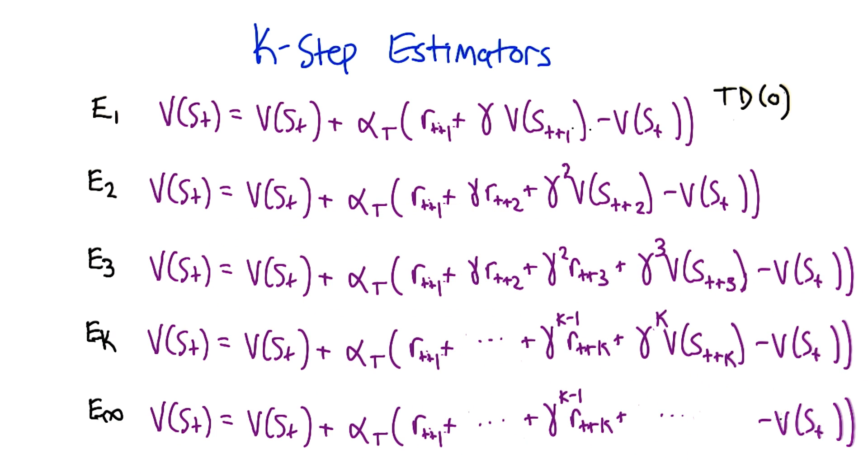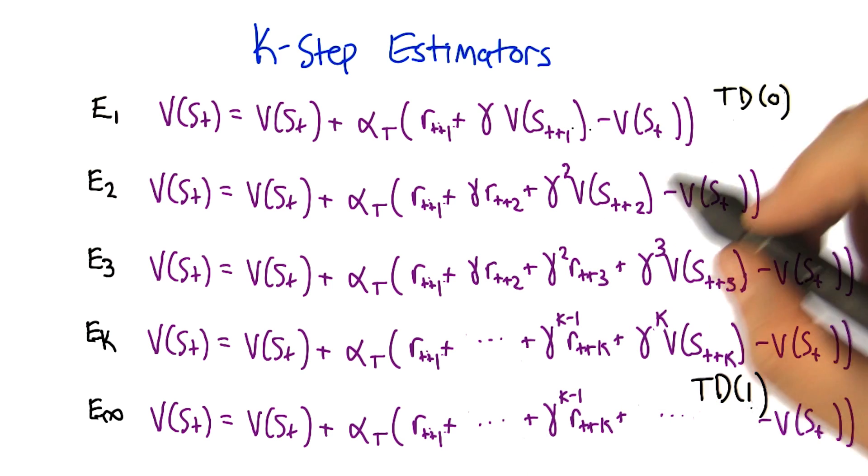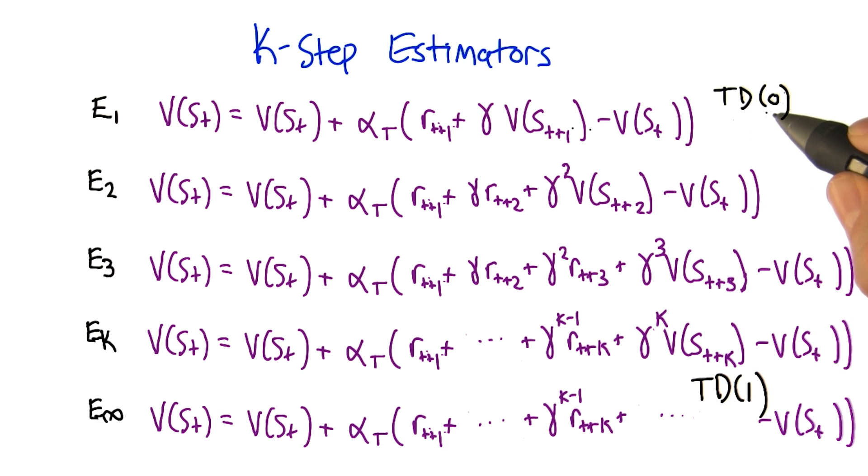Yeah, that looks like TD1. Good. So now we've got TD0 on the one side as a one step estimator and TD1 on the other side as an infinity step estimator. And we've got these other things in between that we don't really have or possibly even need a name for.